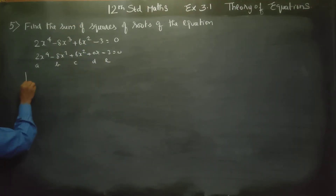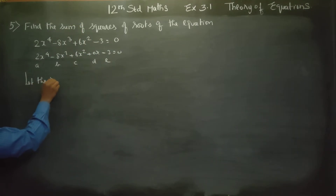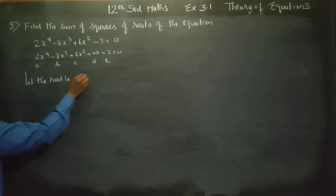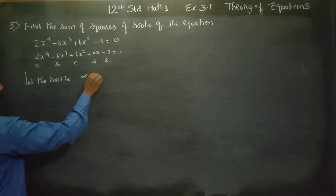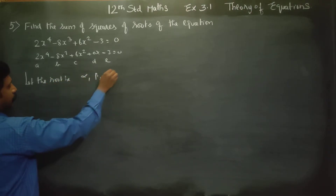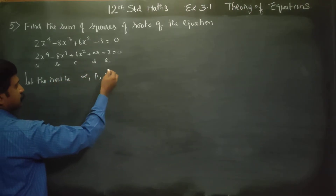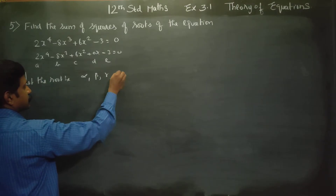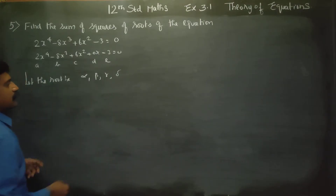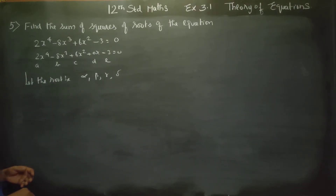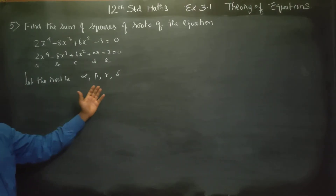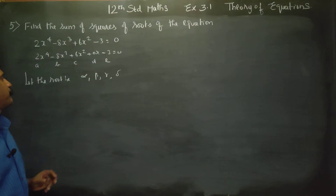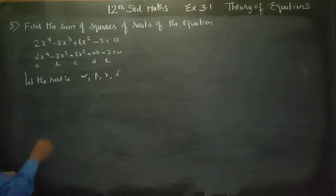Let the roots be alpha, beta, gamma, and delta — four roots of this degree-4 equation.